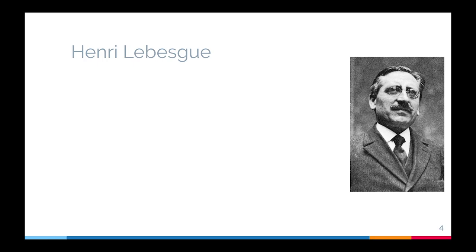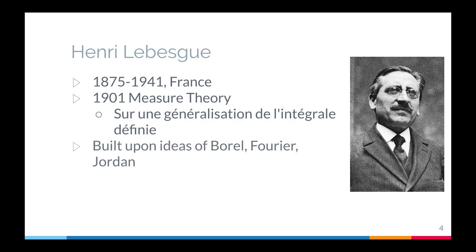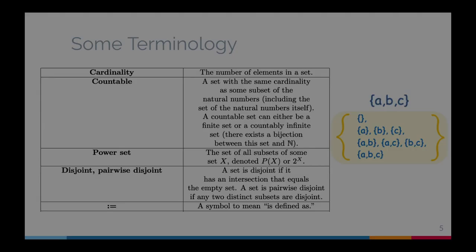So who's the guy behind this integral? That would be Henri Lebesgue. He was born in 1875 in the north of France, studied in Paris, and became a significant figure in academic circles there. He founded the basis of measure theory in 1901 with his paper, and formulated much of the ideas of modern analysis during the turn of the century, building upon the ideas of Fourier, Borel, and Jordan. He also made important contributions to set theory, topology, and calculus of variations, and later in his life forayed into history and pedagogy. Lebesgue was heavily lauded, including being inducted into the Academy of Sciences, and he eventually died in Paris in 1941.